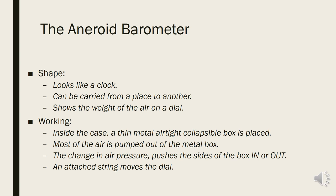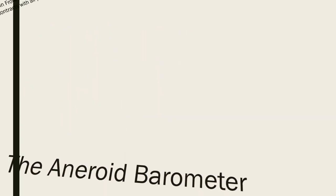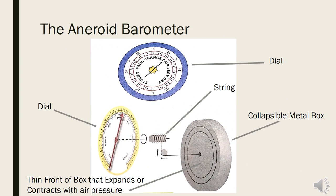As for the shape, the aneroid barometer looks like a clock. It is handy and can be carried from one place to another. An aneroid barometer shows the weight of the air on a dial. Inside the case of an aneroid barometer, a thin airtight collapsible metal box is placed. This box does not have air, as most of the air is pumped out of it. When the air pressure changes, it pushes the sides of the box in or out. A string is attached at the end of the box that moves the dial with the in or out push of the metal box. This is the picture of an aneroid barometer, showing its different parts.